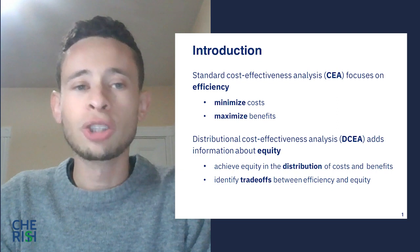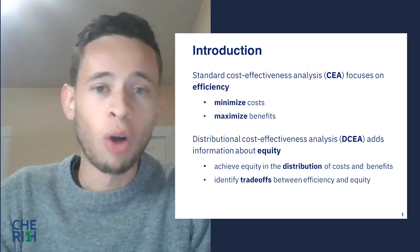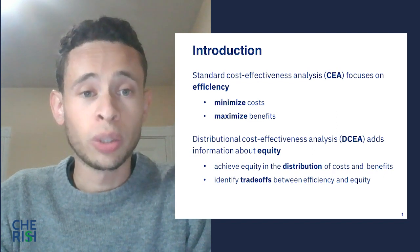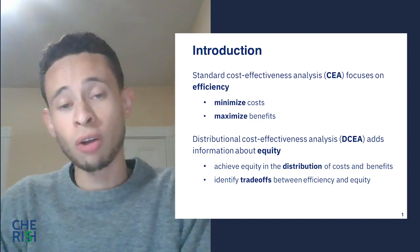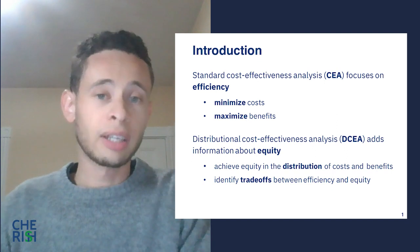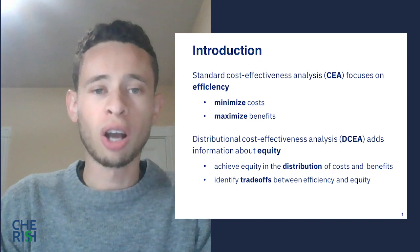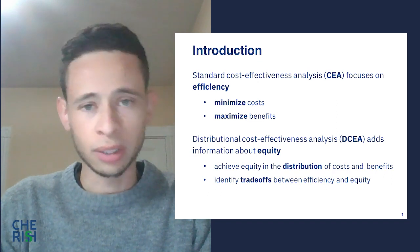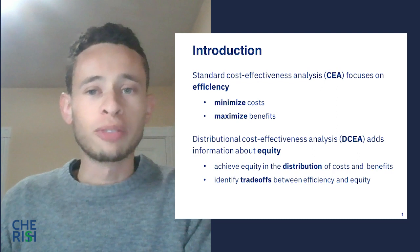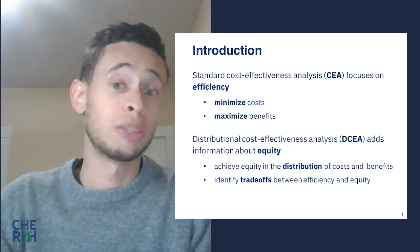Policymakers might not just want to make decisions based on overall costs and benefits; they might also want to consider which populations benefit the most or the least, while still taking into account efficiency. Distributional cost-effectiveness analysis, or DCEA, which extends the scope of CEA, can help to support this specific type of decision making.